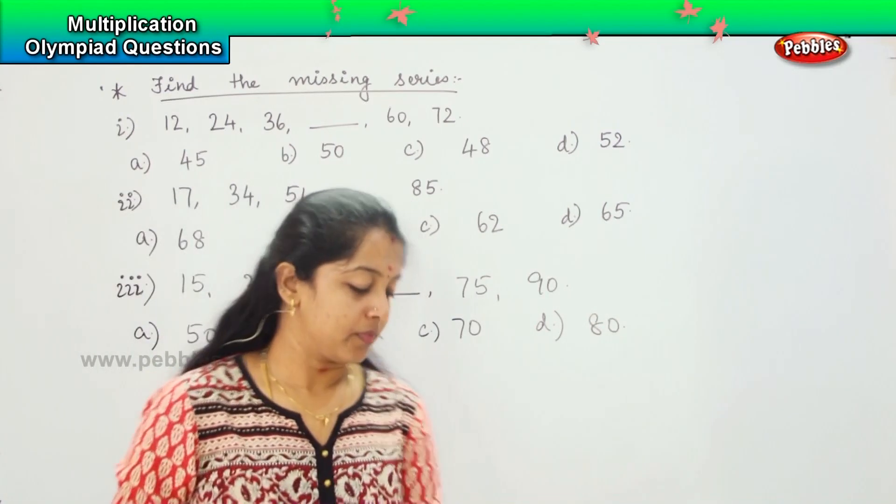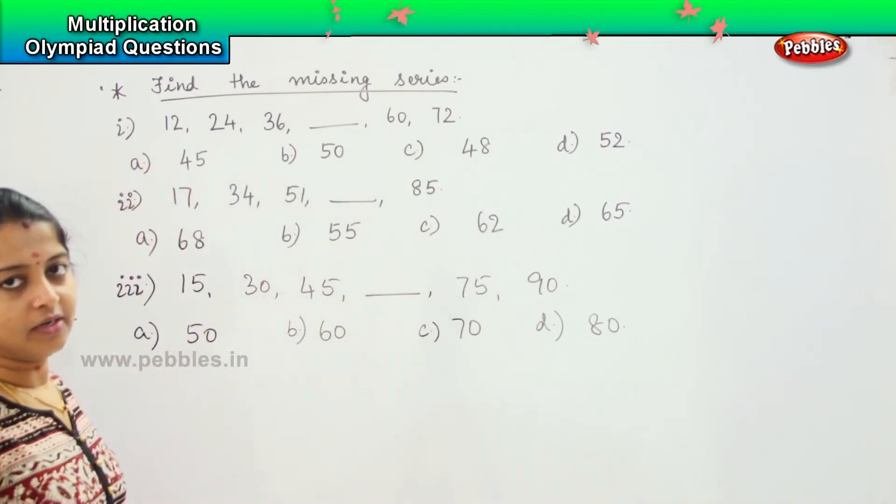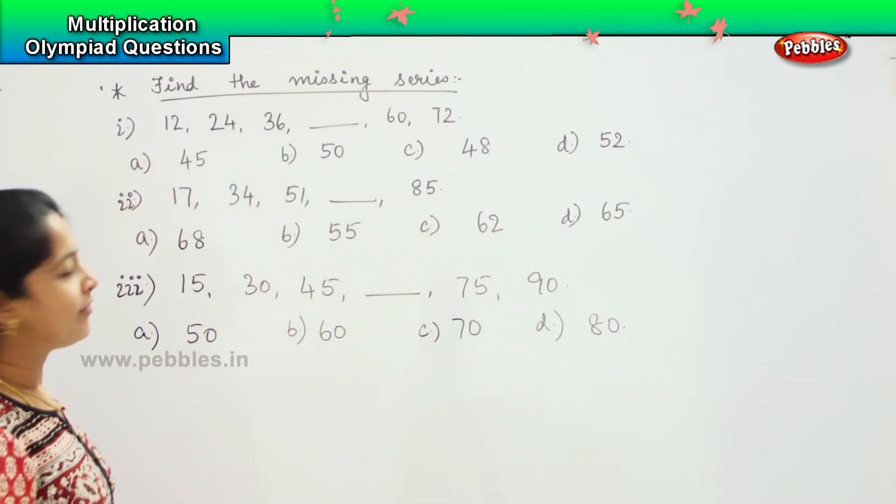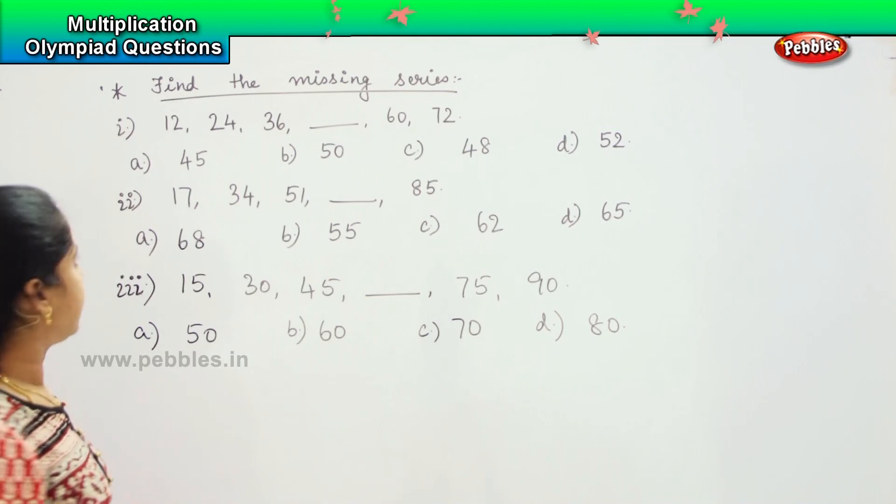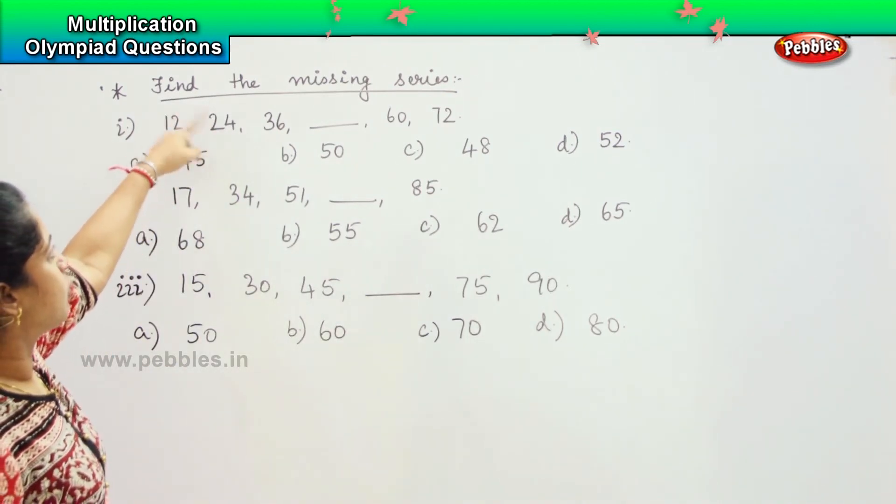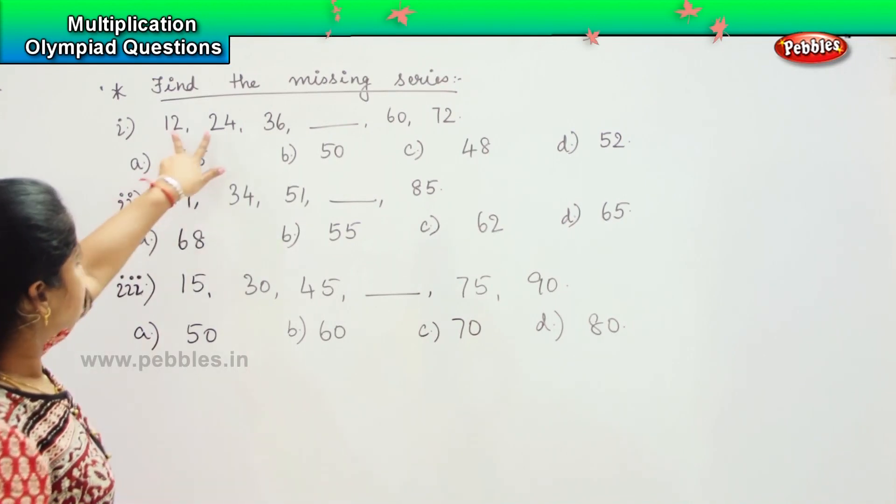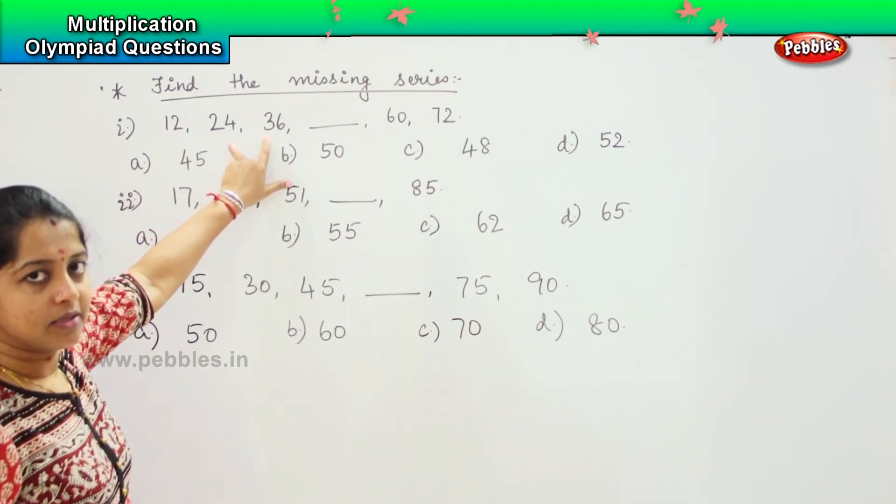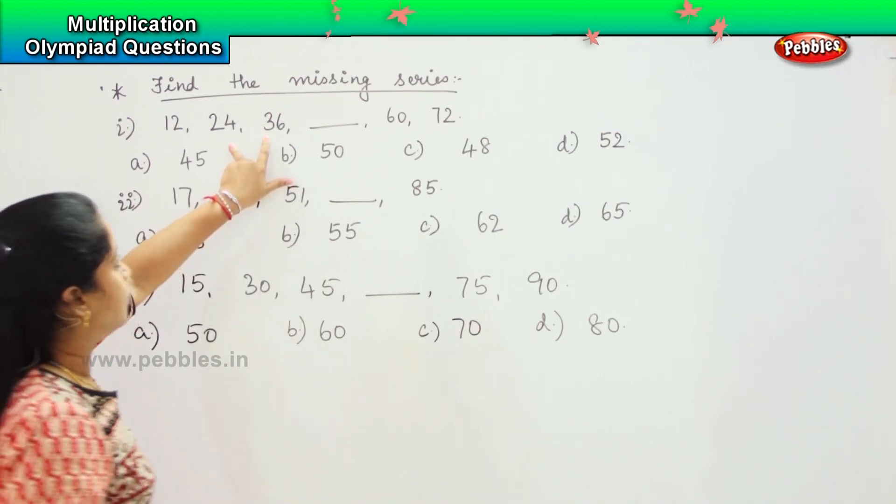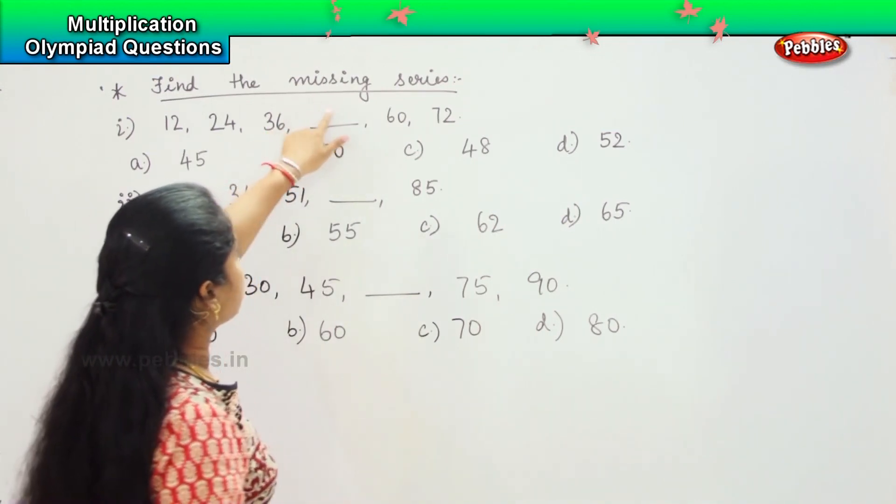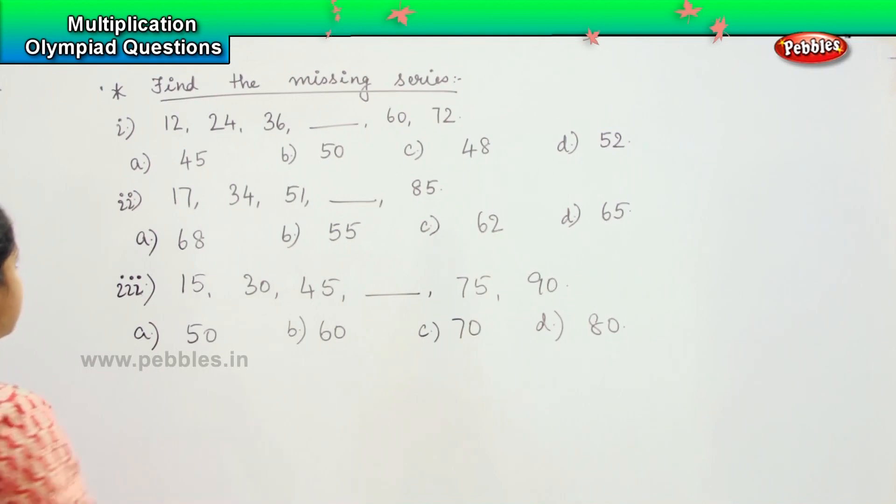What pattern is followed here? It's very easy, right? You are following the skip counting. From 12 to 24, what is the difference? Good, it is 12. From 24 to 36, 12. So the next one will be you have to add 12 from 36.